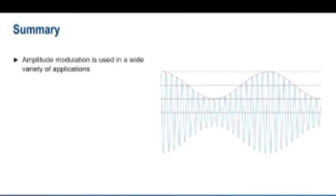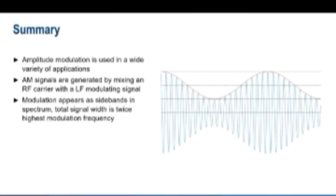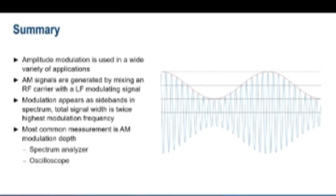So in summary, amplitude modulation is used in a wide variety of applications such as broadcasting and EMC. AM signals are generated by mixing an unmodulated RF carrier with a low frequency modulating signal. If you look at an AM signal in the frequency domain, the modulation appears in spectral sidebands, with the total width of the modulating signal being equal to twice the highest modulating frequency. The most common measurement of an AM signal is modulation depth. Modulation index can be measured using either a spectrum analyzer or an oscilloscope.